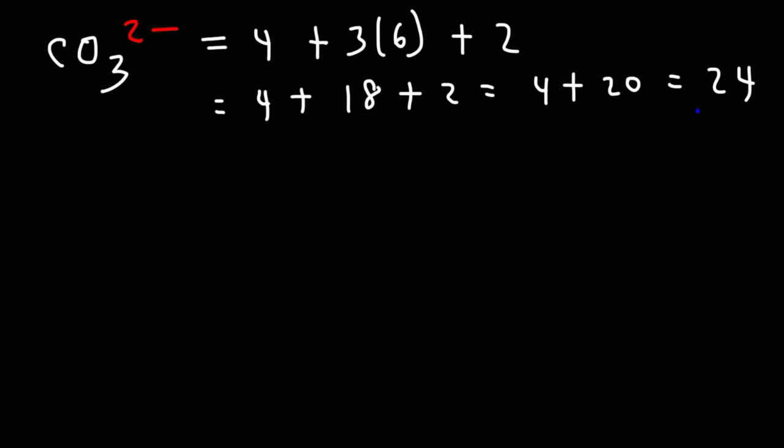So note that we have a multiple of 8. Whenever you get a multiple of 8 in terms of valence electrons, and if there's no hydrogen atoms present in the structure, this tells you that the central element, in this case carbon, is not going to have any lone pairs on itself. It's only going to be attached to bonds.